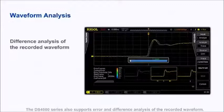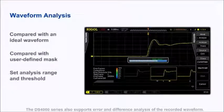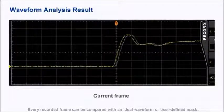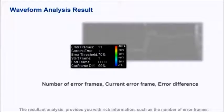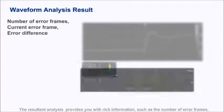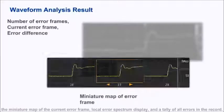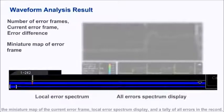The DS4000 series also supports error and difference analysis of the recorded waveforms. Every recorded frame can be compared with an ideal waveform or user-defined mask. The resultant analysis provides you with rich information such as the number of error frames, a miniature map of the current error frame, local error spectrum display, and a tally of all the errors in the record.